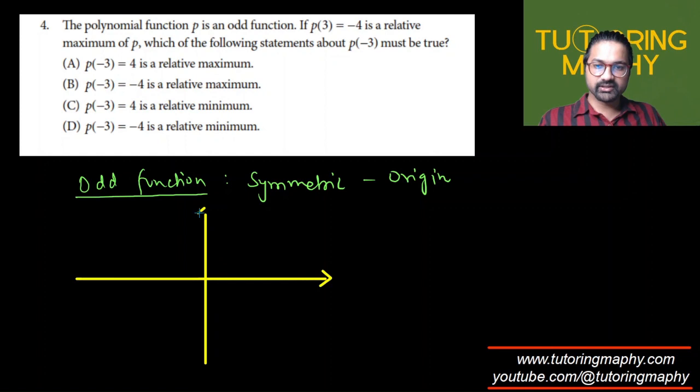This is our coordinate axis. It's already given that p(3) = -4, so this is 3 and this is -4. So p(3) = -4 is somewhere over here, and this is a relative maximum of p.